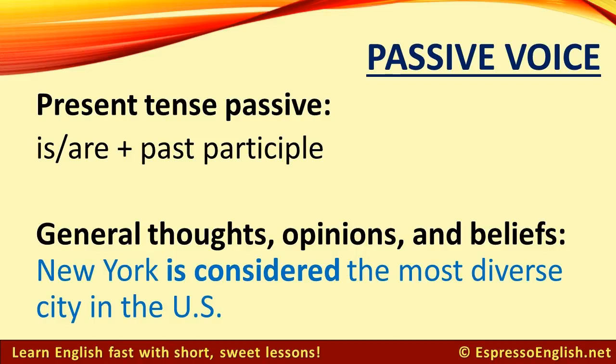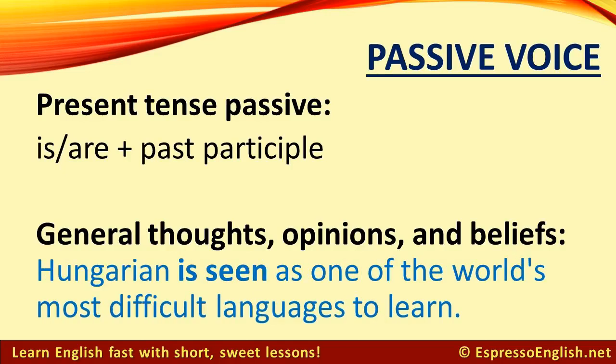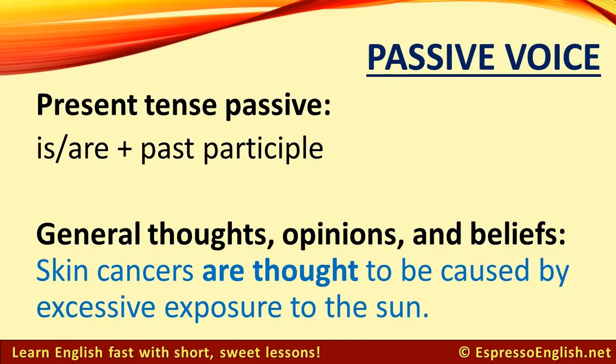We also use the present tense passive voice for general thoughts, opinions, and beliefs. For example, New York is considered the most diverse city in the U.S. It is believed that Amelia Earhart's plane crashed into the Pacific Ocean. Hungarian is seen as one of the world's most difficult languages to learn. Skin cancers are thought to be caused by excessive exposure to the sun.